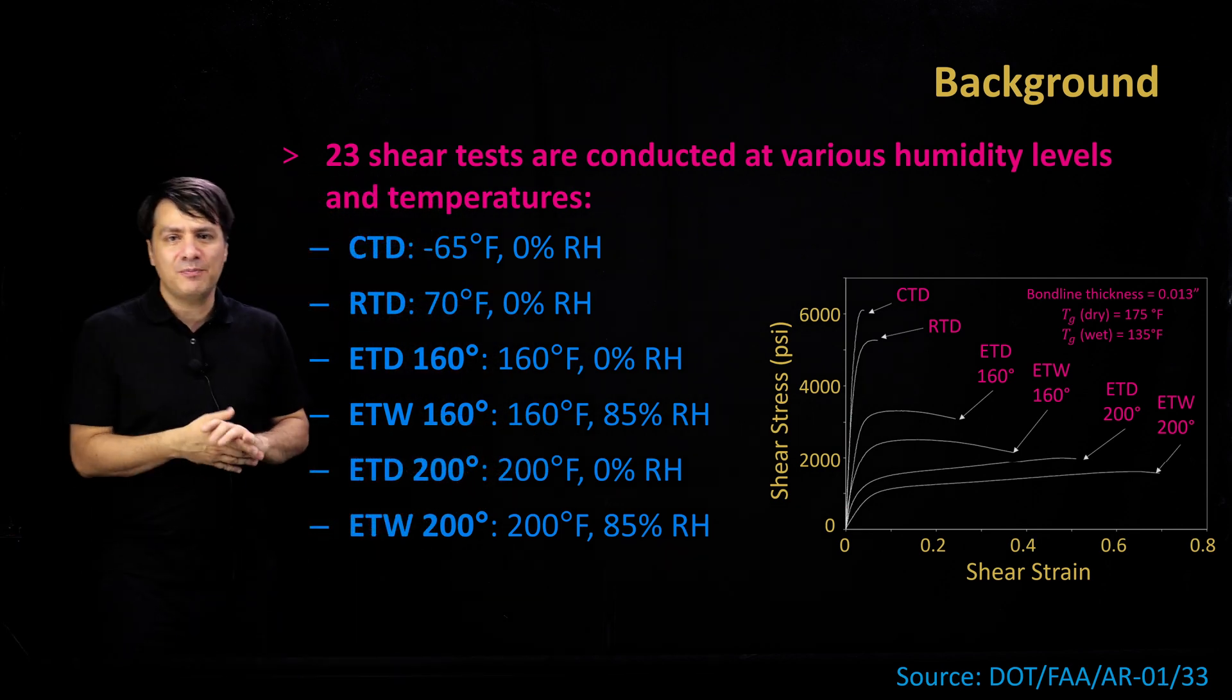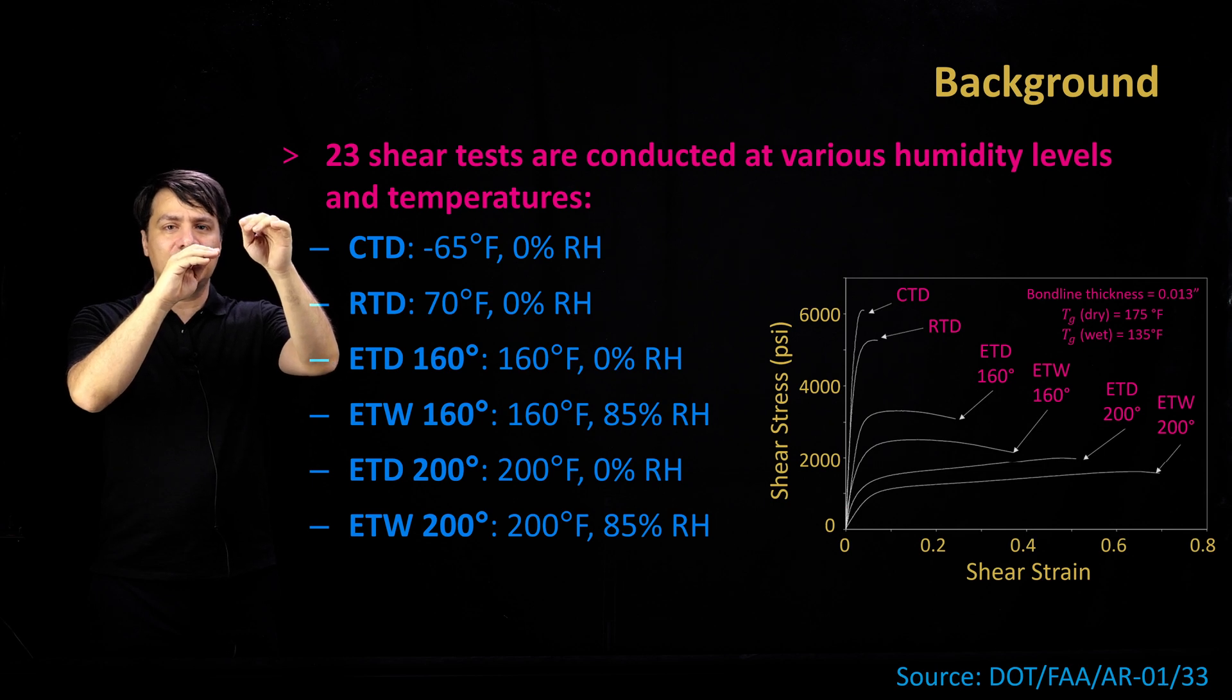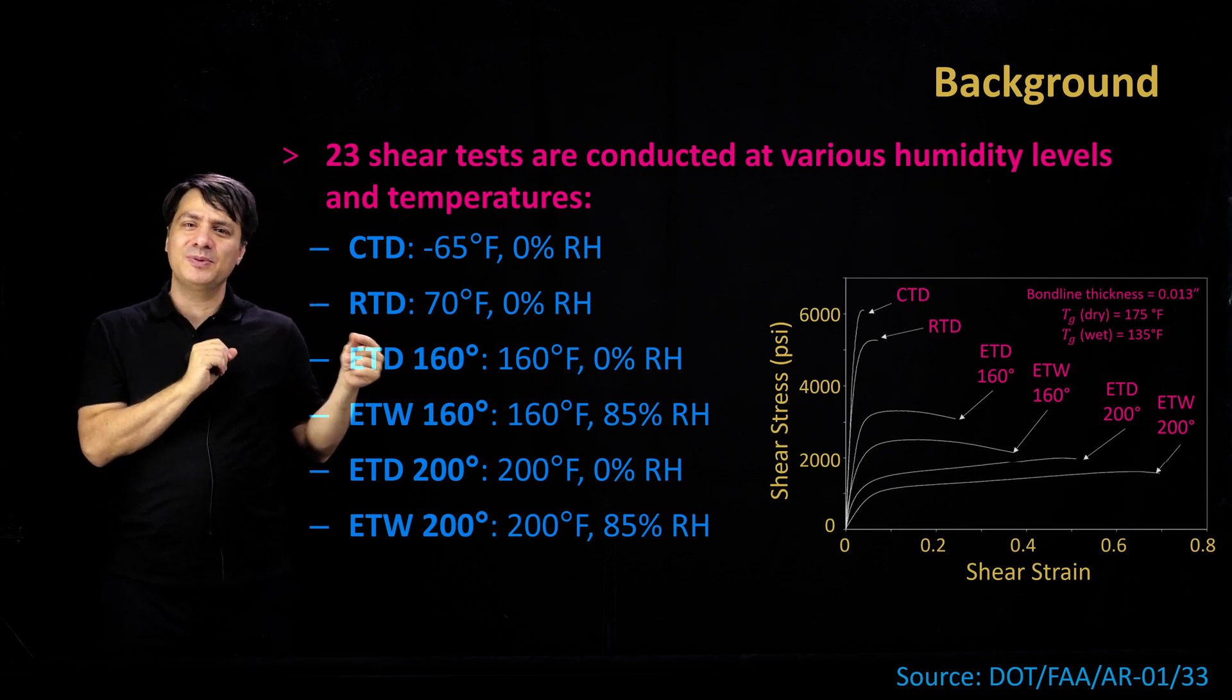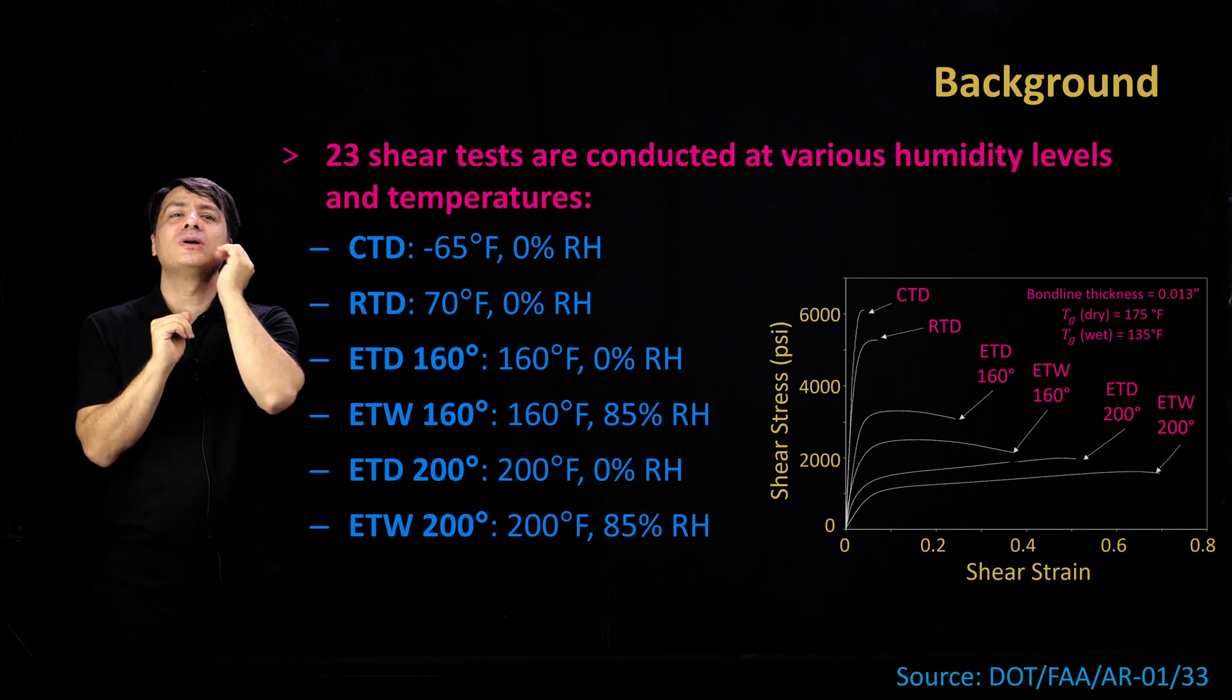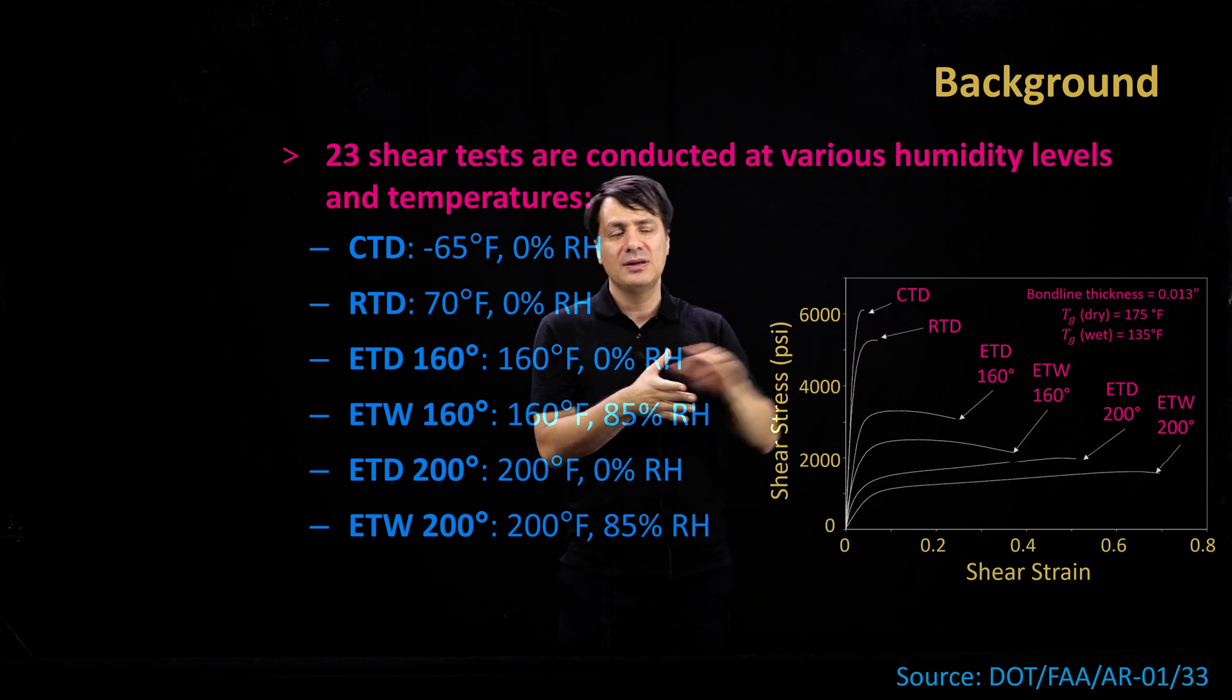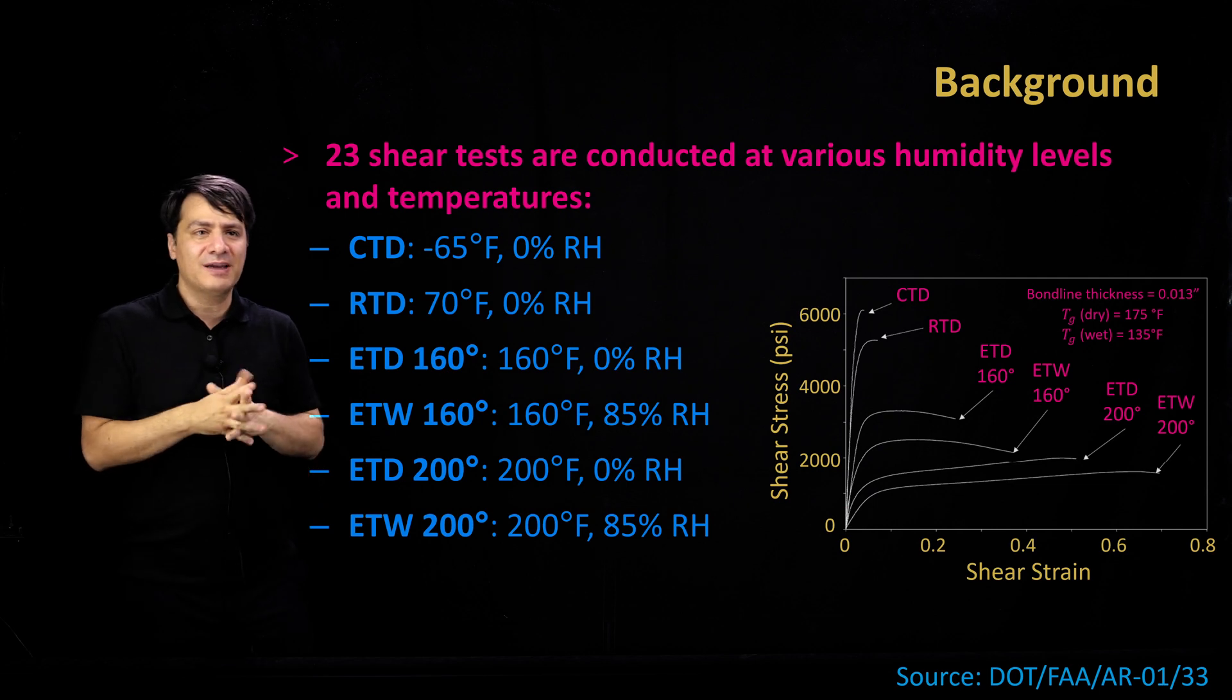Basically, for every polymer, there is a specific temperature. If you heat up and get too close to that temperature, the polymer starts becoming softer and becomes rubbery. This glass transition temperature is important because we don't want to get too close to or go too much higher than that temperature. So they have concluded that at dry condition and wet condition, you have different glass transition temperatures: 175°F and 135°F.